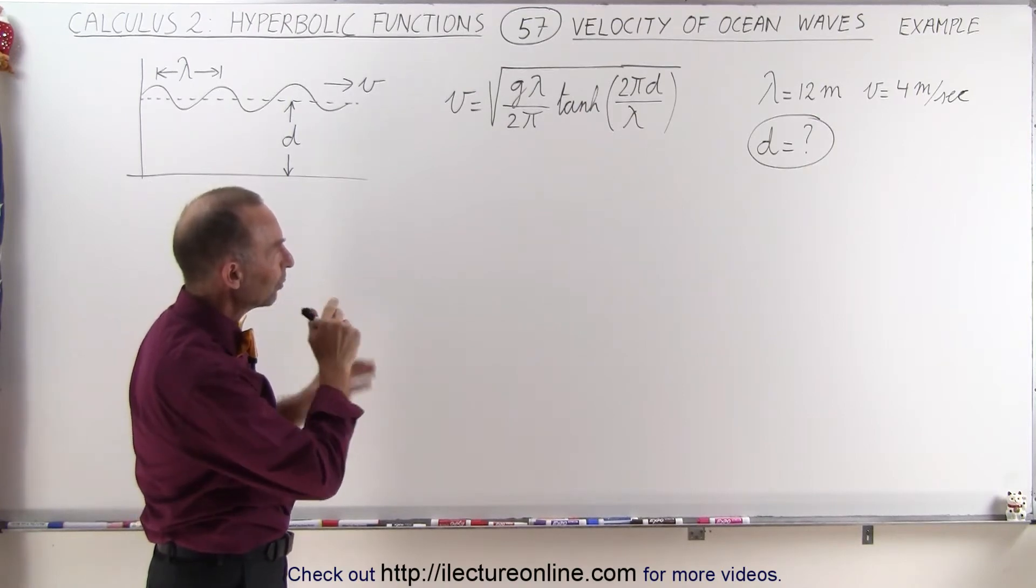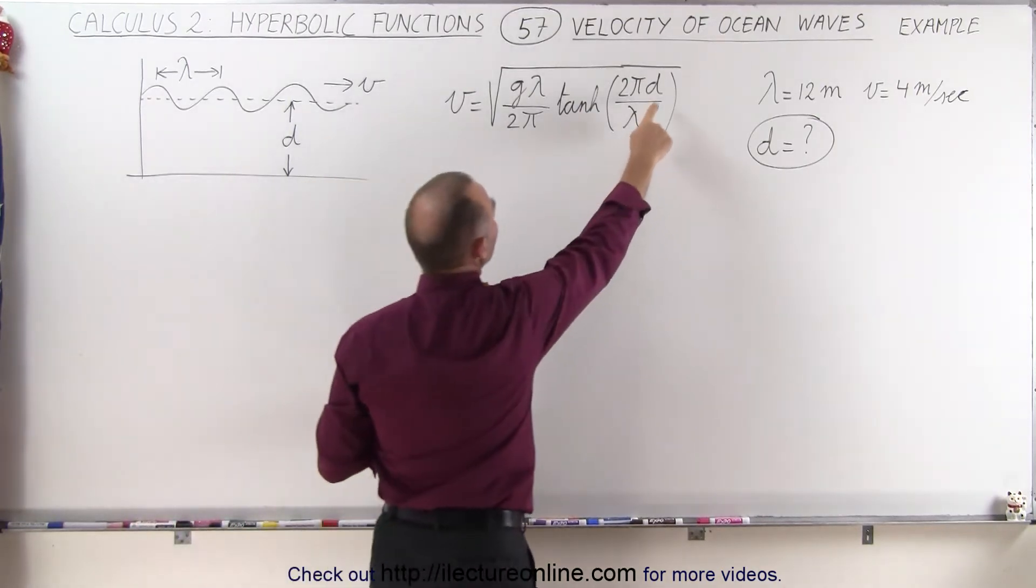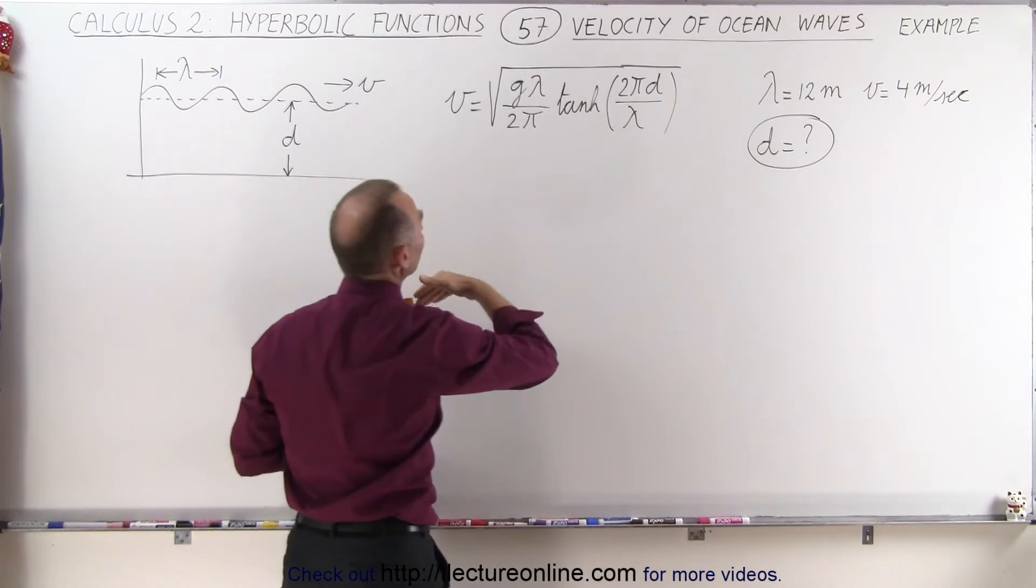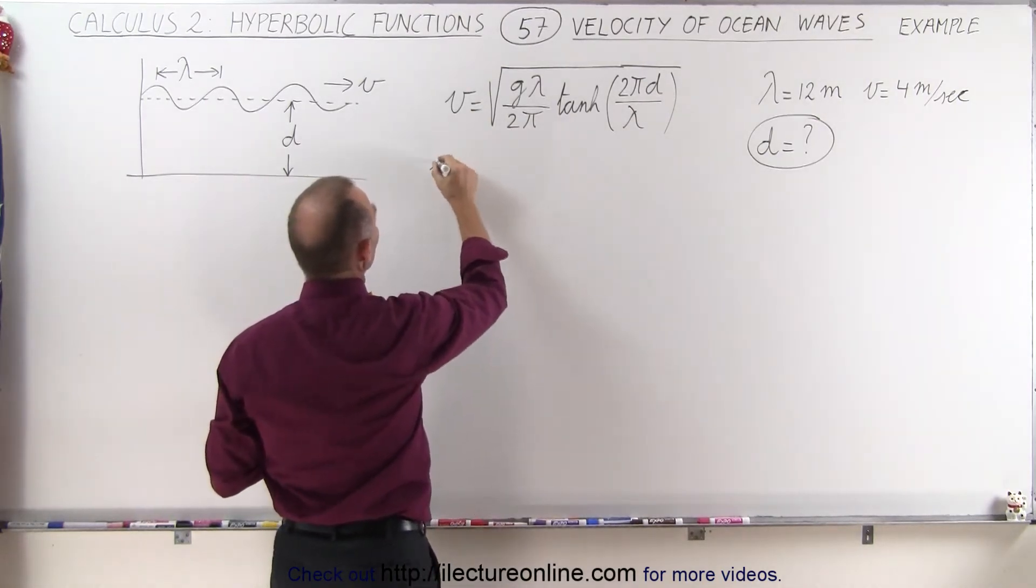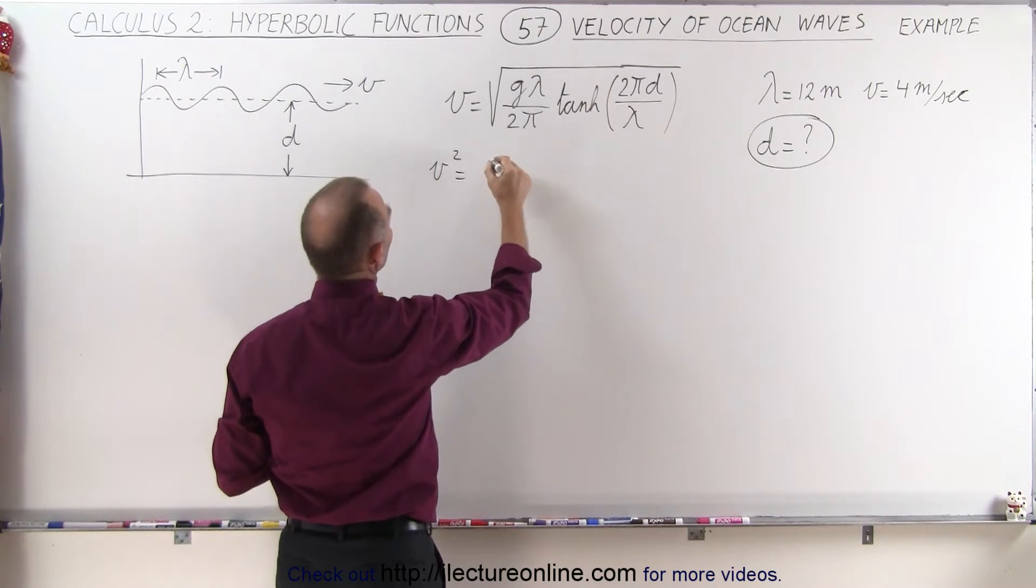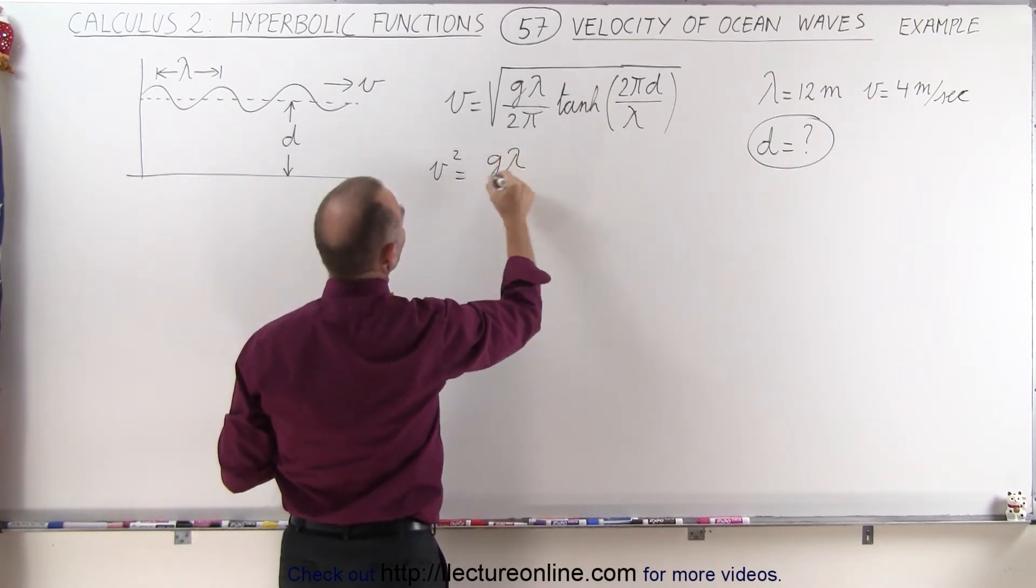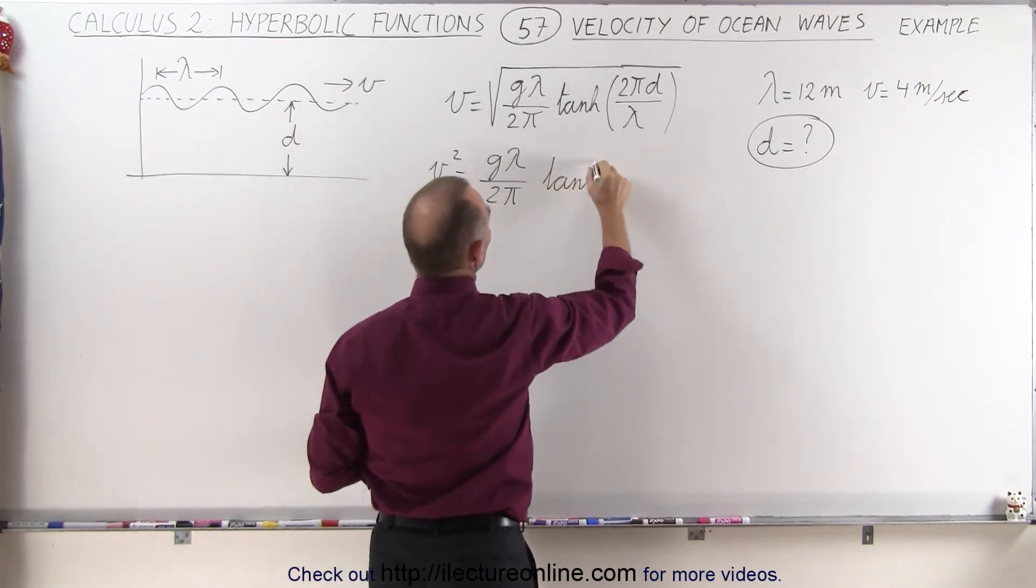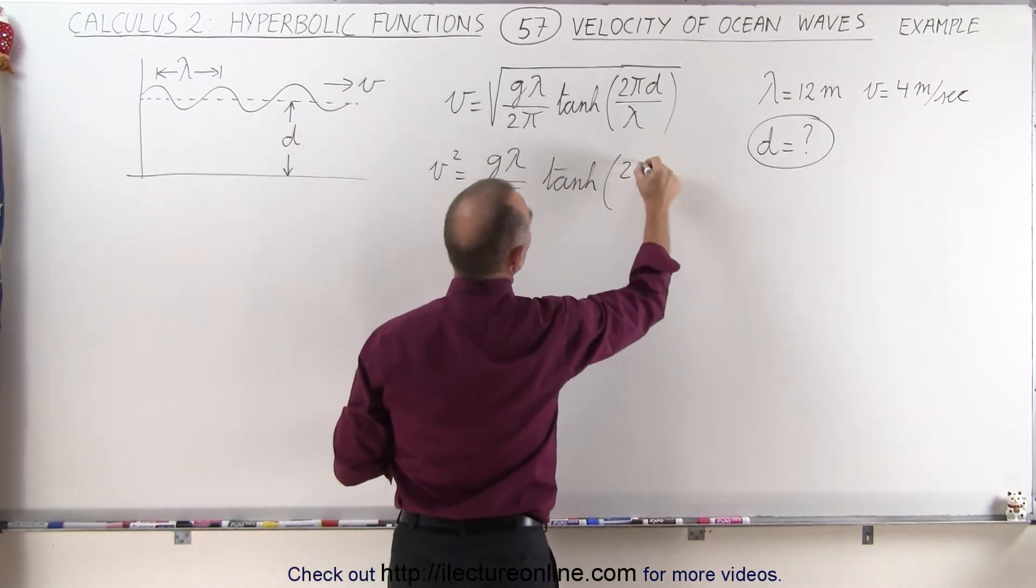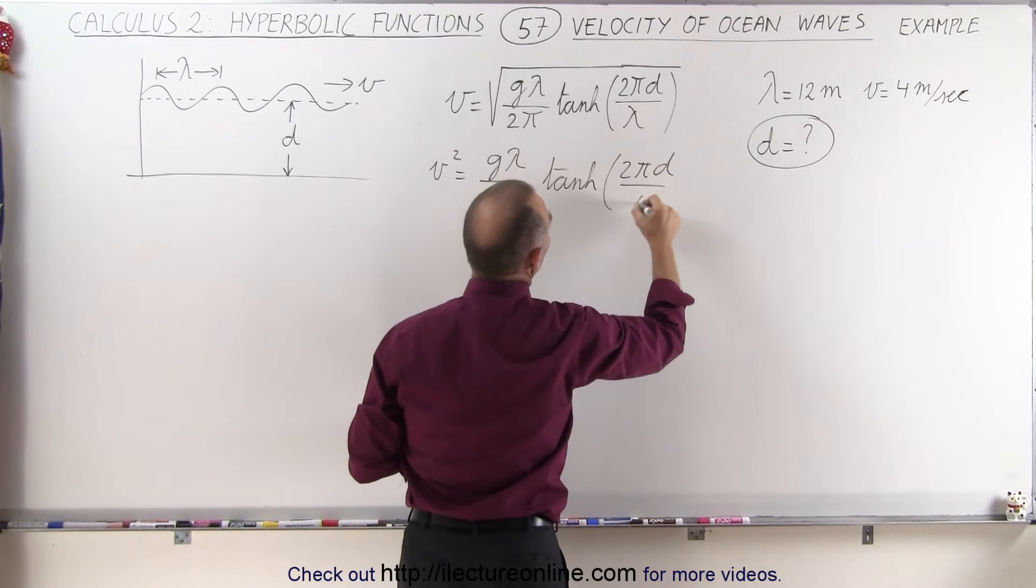Okay, how do we do that? Well, we're given everything except d, so what we want to do here is probably square both sides. When we do that, we get v squared is equal to g times lambda divided by 2π times the hyperbolic tangent of 2πd over lambda.